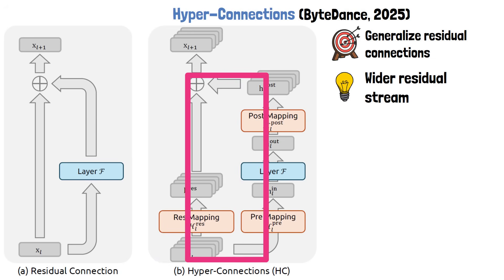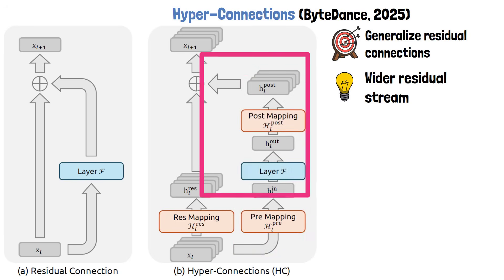On the right side of the block, the expanded input is first projected back down to the model dimension before being processed by the module F. This means we don't pay the computational cost of the expanded representation inside expensive components like attention or feedforward layers. The output of module F is then expanded using another learnable matrix and afterwards it is combined with the residuals forming the output of the block and the input for the next layer. There's no doubt that this design gives the model more expressive power along the residual stream. The network has much more flexibility in how information flows across layers.